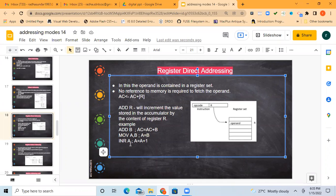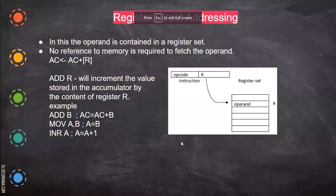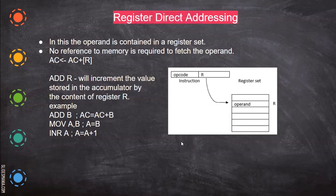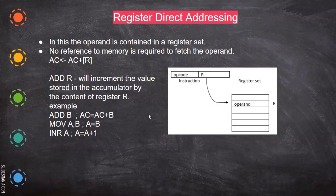Then INR A — increment A — that is, whatever may be the accumulator value, it will be incremented by 1. So just one increment. You can see there is no memory location reference — all are registers.